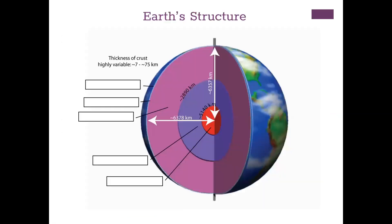Here is one of the first activities in your lab. Go through and label what you think each of the layers are based on what we just talked about. You can label these A, B, C, D, E in your lab section if you are not doing this by hand.